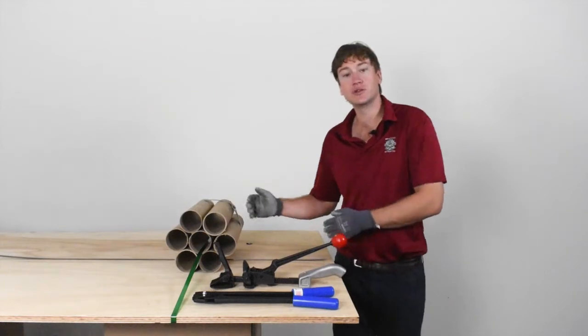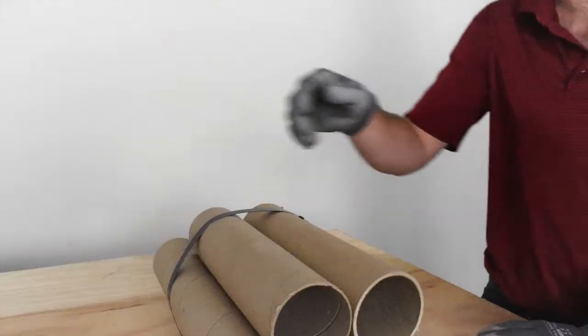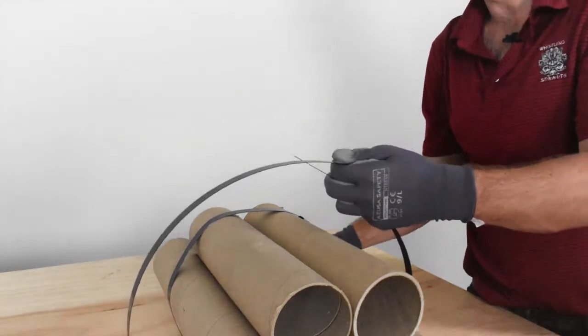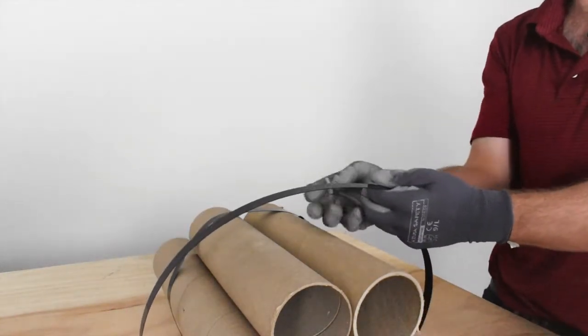So I have a round load here that I'm going to use to demonstrate how it works. So you take your steel strap and then we're going to take our pusher seal for our round load here.